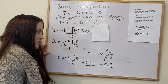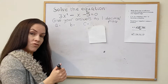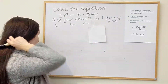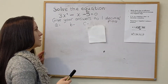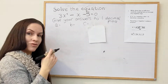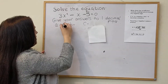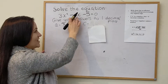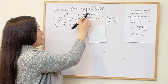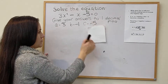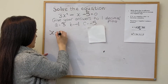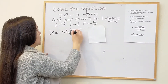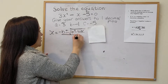For the next example, solve 3x squared minus x minus 5 equals 0, giving answers to one decimal place. We go through the same strategy — write down coefficients including any negative signs. So a is 3. For b, there's no written number but that's an invisible 1, so it's actually negative 1. And c is negative 5. The formula is x equals negative b plus or minus the square root of b squared minus 4ac all over 2a.